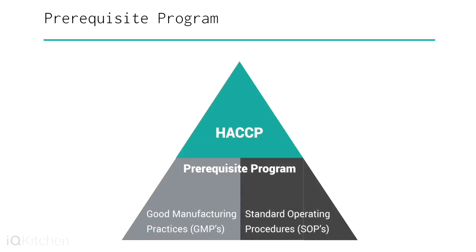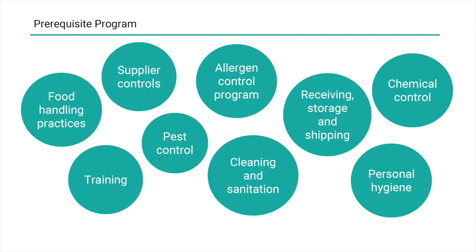The HACCP system must be built upon a solid foundation of prerequisite programs, such as good manufacturing practices (GMPs) and standard operating procedures. They provide the basic environmental and operating conditions that are necessary for the production of safe, wholesome food. These are some examples for GMPs and SOPs. All prerequisite programs should be documented and regularly audited.